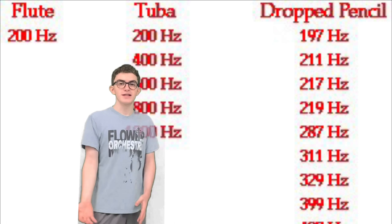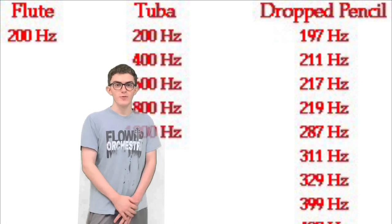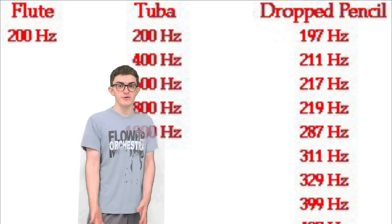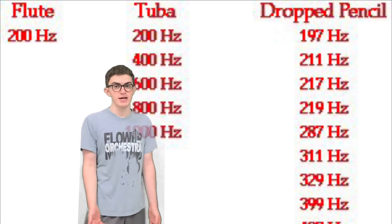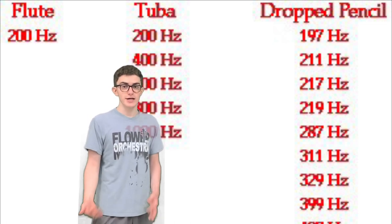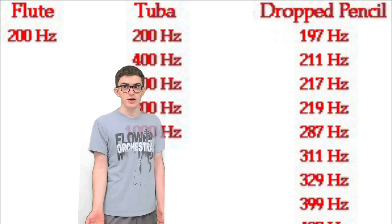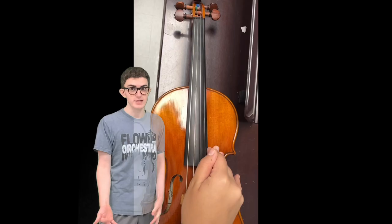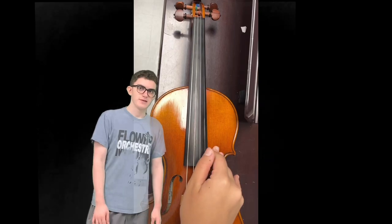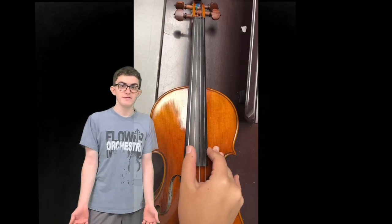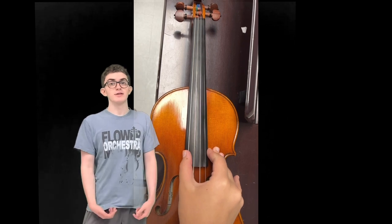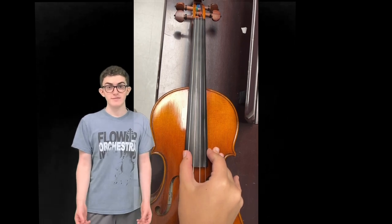First, how does a violin even work? Well, every object has a natural frequency that it vibrates at, and as musicians, our job is to manipulate these frequencies. The wavelength of these frequencies are called standing waves.